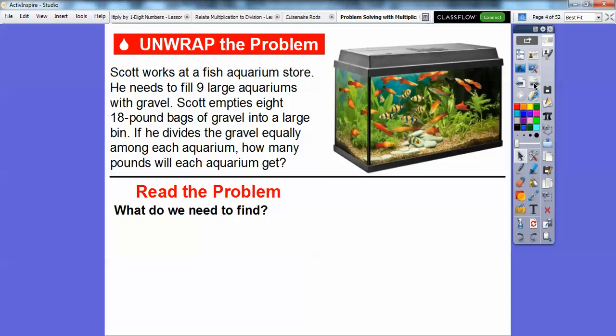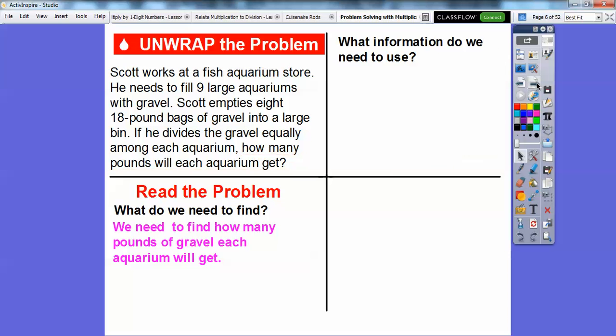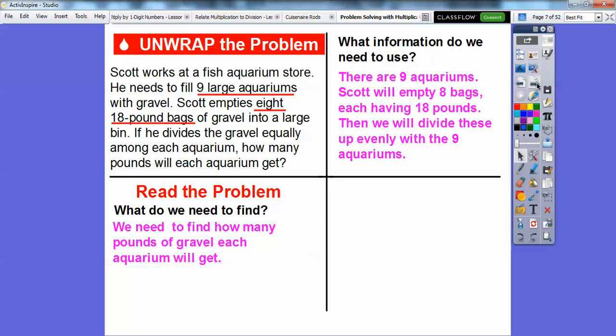Let's decipher and break this problem apart. What do we need to find? We need to find how many pounds each aquarium will get. What information are we going to use? There are nine aquariums, and the hidden number is eight 18-pound bags. We're going to multiply eight times 18 to figure out the total pounds, then divide that evenly among the nine aquariums.